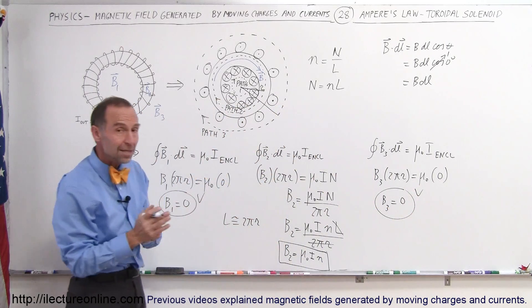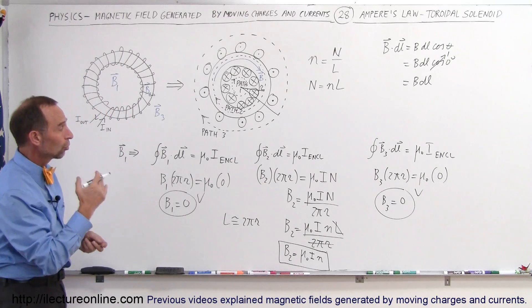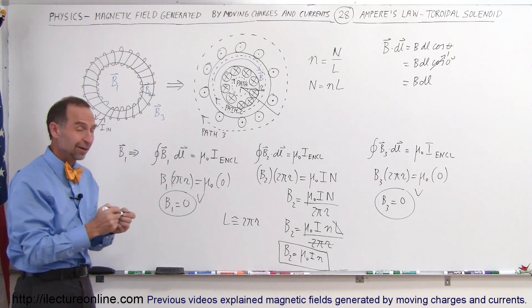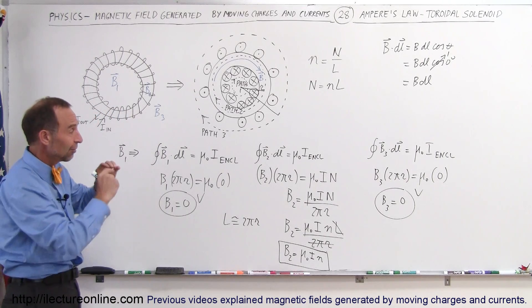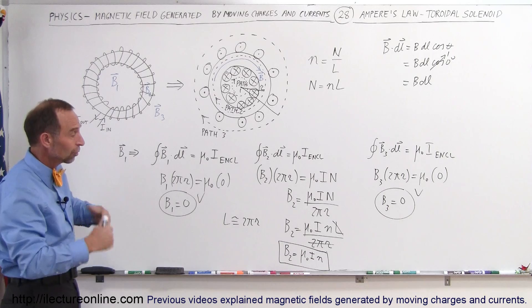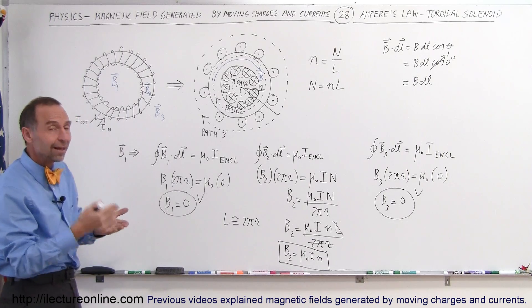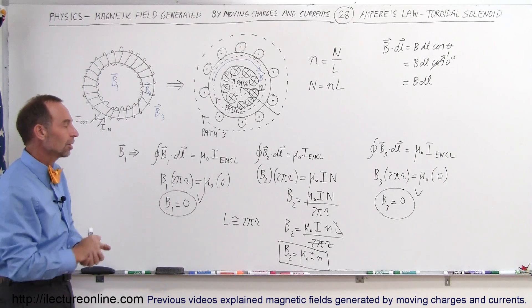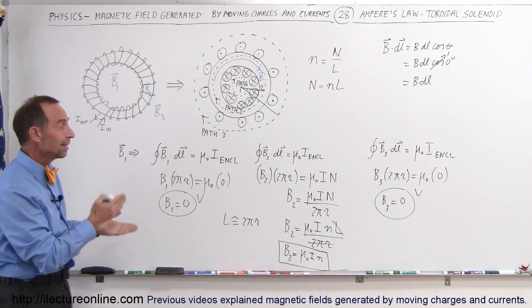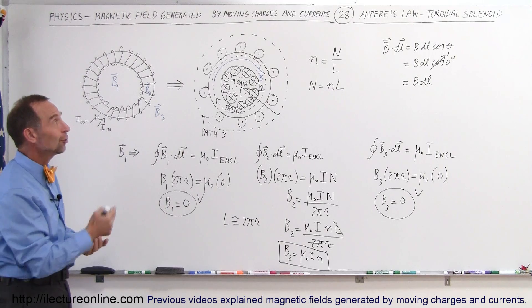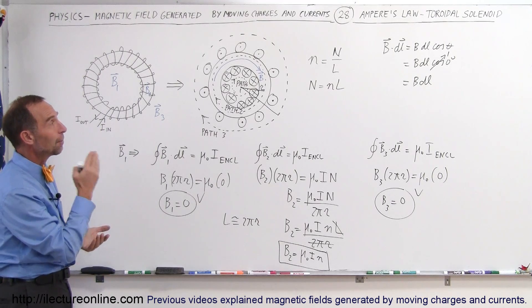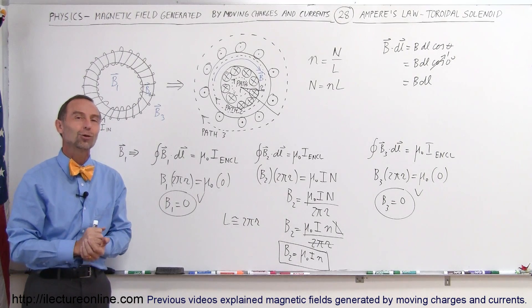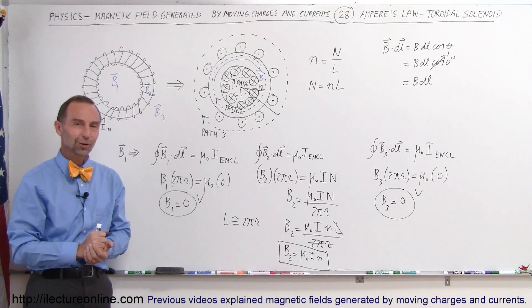So B1 and B3 are both zero, and inside the toroidal solenoid the magnetic field is the same as in a straight solenoid: μ₀ times I times the number of wires per unit length. That's how we use Ampere's law to find the magnetic field inside a toroidal solenoid.